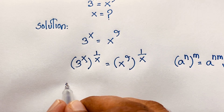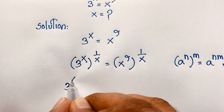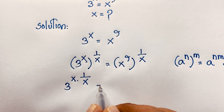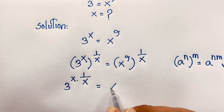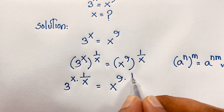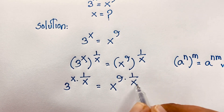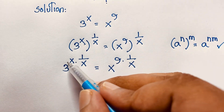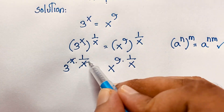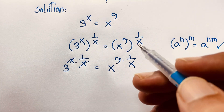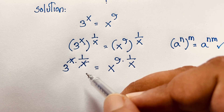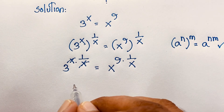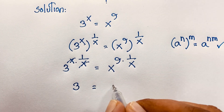Applying this formula, the left side becomes 3 to the power x times 1 over x, and the right side becomes x to the power 9 times 1 over x. The x cancels out on the left side, giving us 3 to the power 1, which is simply 3.